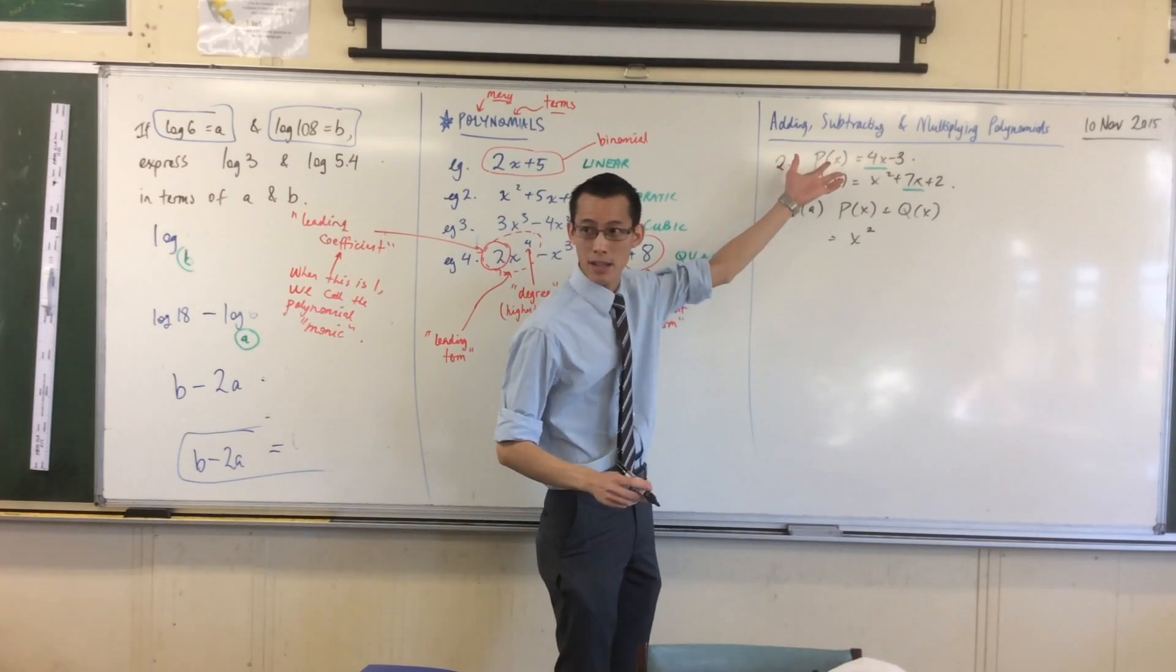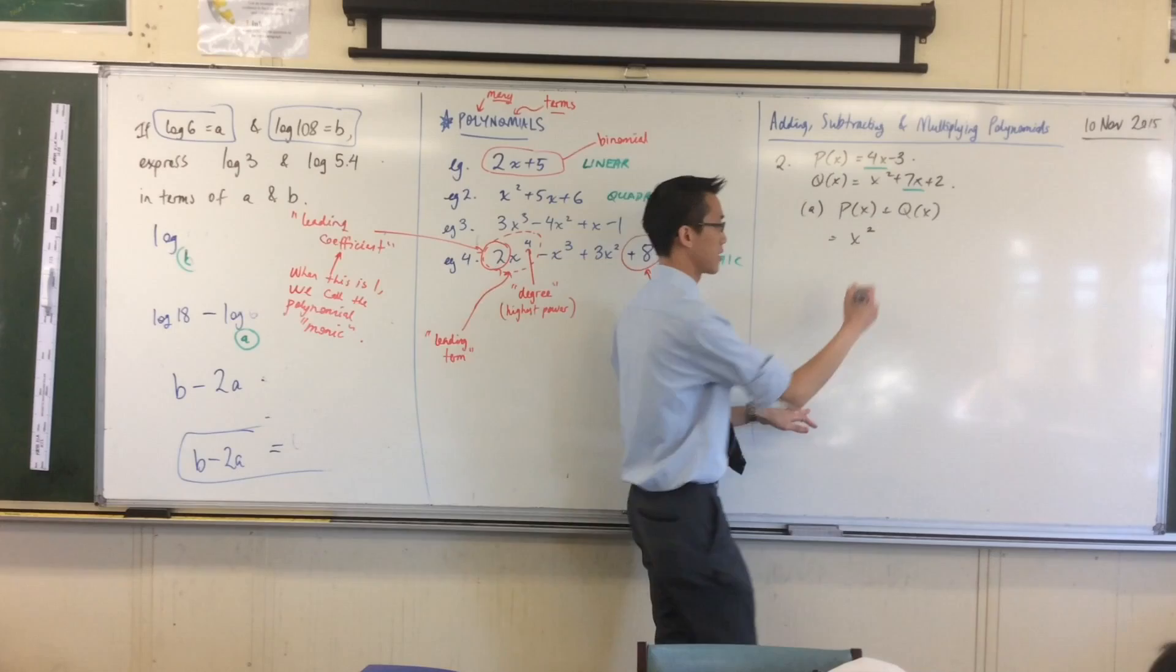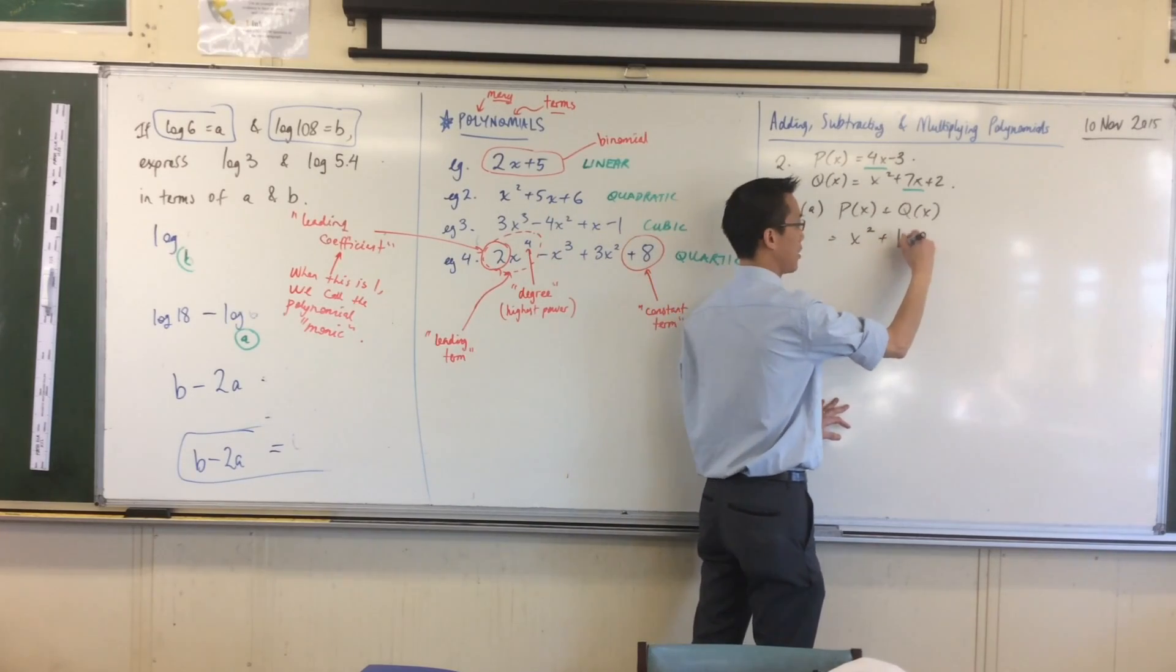And if you don't have colors, go and buy some, because they're really useful. There's that X term there and there in P and in Q. So I'm going to match them up. And I say, well, I'm adding things. So 4X plus 7X. That's how many X? 11. Done.